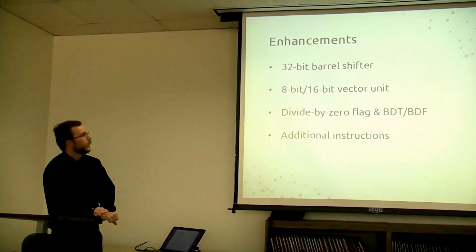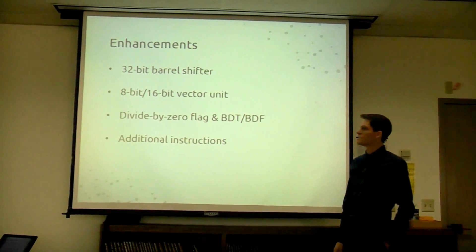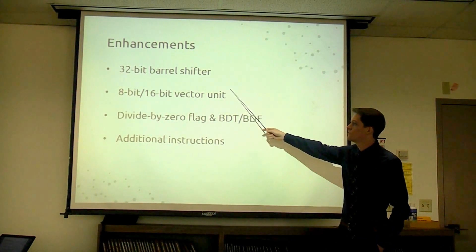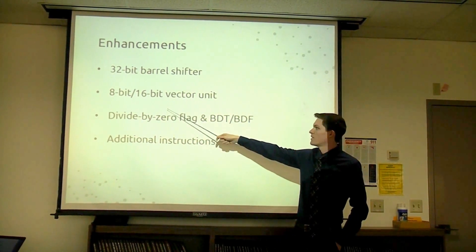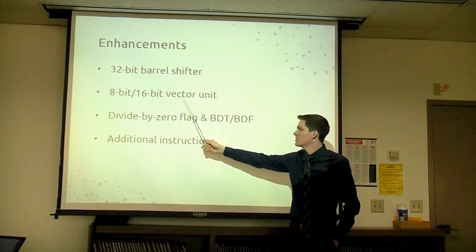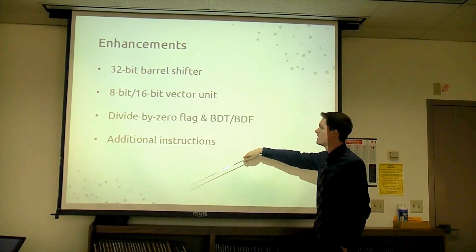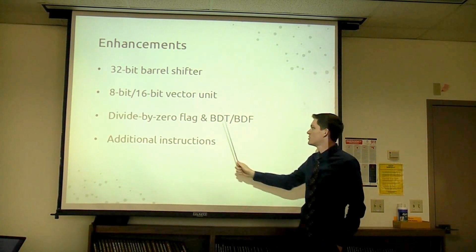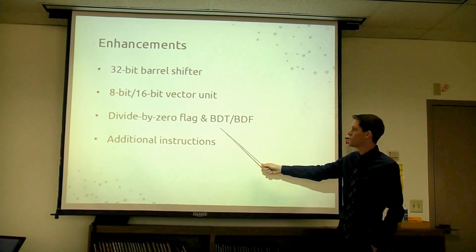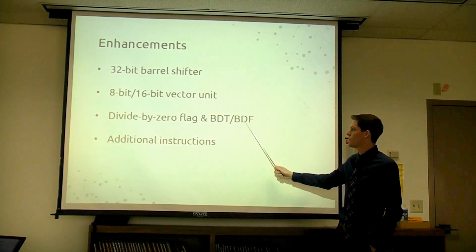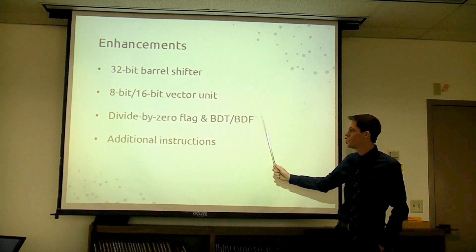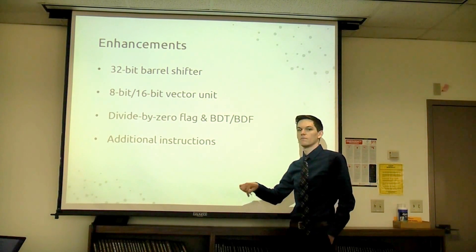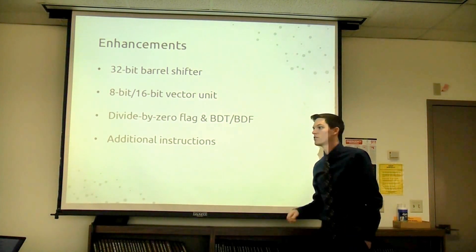For our enhancements, we have four main ones: a 32-bit barrel shifter, an 8-bit by 16-bit vector unit, a divide by zero flag, and two branching statements — branch divide by zero true or false. We also have additional instructions added to the regular ALU.